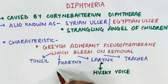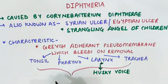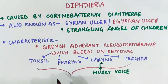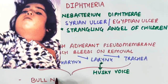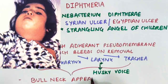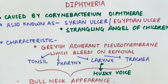Along with involvement of these structures, there is enlargement of the submandibular and anterior cervical lymph nodes, leading to soft tissue edema and giving a bull neck appearance to the patient.